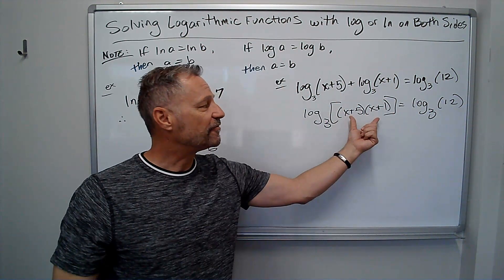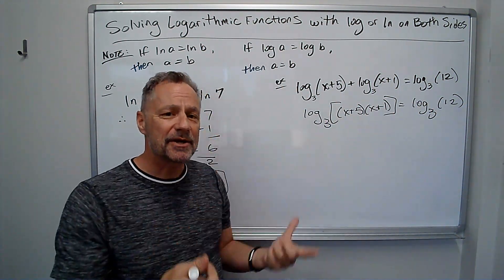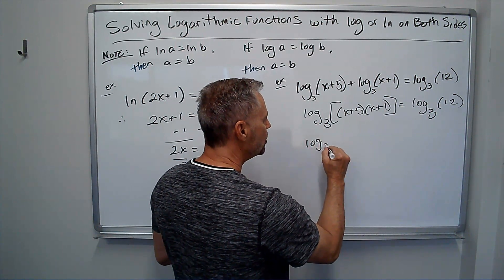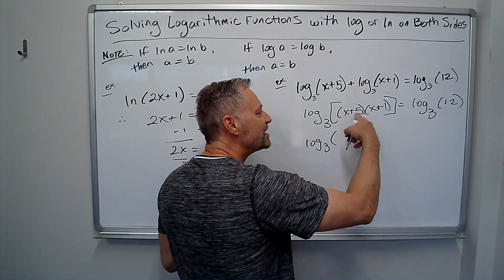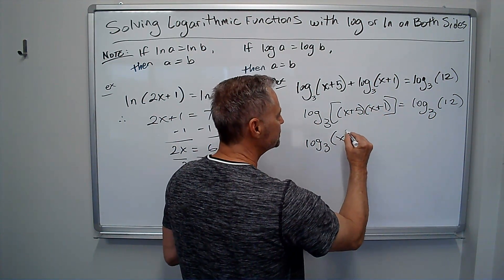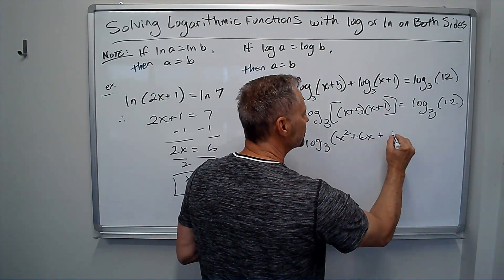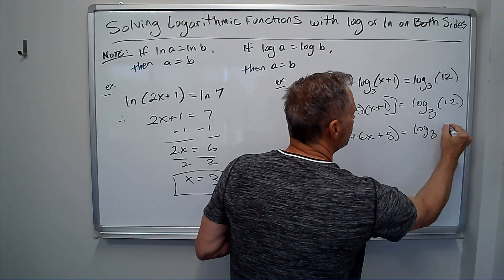Now, I'm going to FOIL these out. I'm not going to write it. I'm just going to write what it comes down to. So I've got log base 3. Well, that's going to be x squared, 5x plus 1x is 6x, and then 5 times 1 is 5, equals log base 3 of 12.